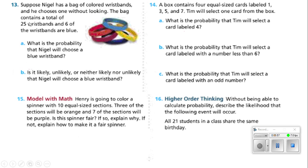Number 13: Nigel has a bag of colored wristbands and he chooses one without looking. The bag contains 25 wristbands total and six are blue. The probability Nigel will choose a blue wristband is six out of 25. It is unlikely that Nigel will choose a blue wristband — that's not even half of 25, so it's more likely he'll get a color that is not blue.